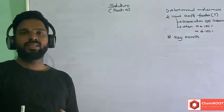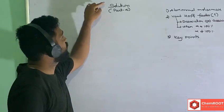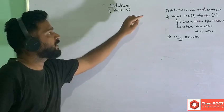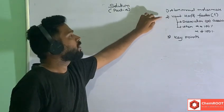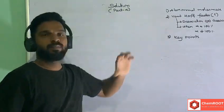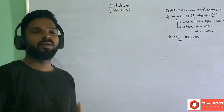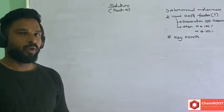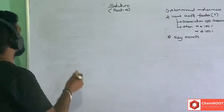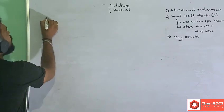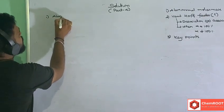Hi students, in this part — Solution Part 4 — we are discussing abnormal molar masses, the Van't Hoff factor, and some key points related to the Van't Hoff factor and colligative properties. First, we are going to discuss abnormal molar mass.